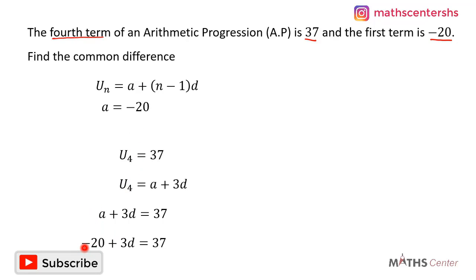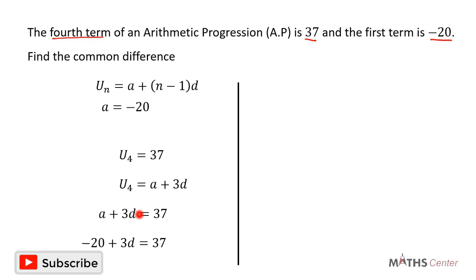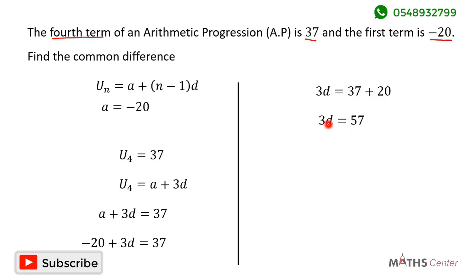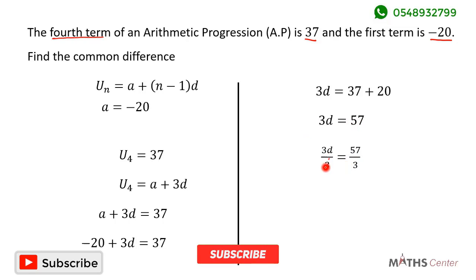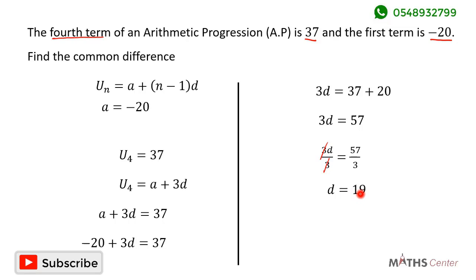Substituting, we get negative 20 plus 3D is equal to 37. Moving 20 to the right-hand side, our equation becomes 3D is equal to 37 plus 20. Since 37 plus 20 is 57, we have 3D is equal to 57. Dividing both sides by 3, D is equal to 57 divided by 3, which is 19.